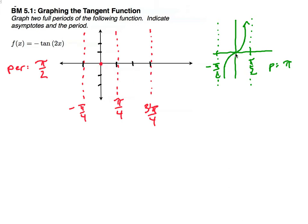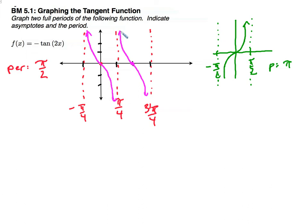At the origin, tangent of 0 is 0, so I can start here. But instead of starting down at the bottom and going up, I do have this negative sign, which is going to make a horizontal reflection. So I'll actually start up at the top and go down. Since I can't touch the asymptotes, I'll just ride right along there. And there's one period. Do another period — come down like that. And there you go.